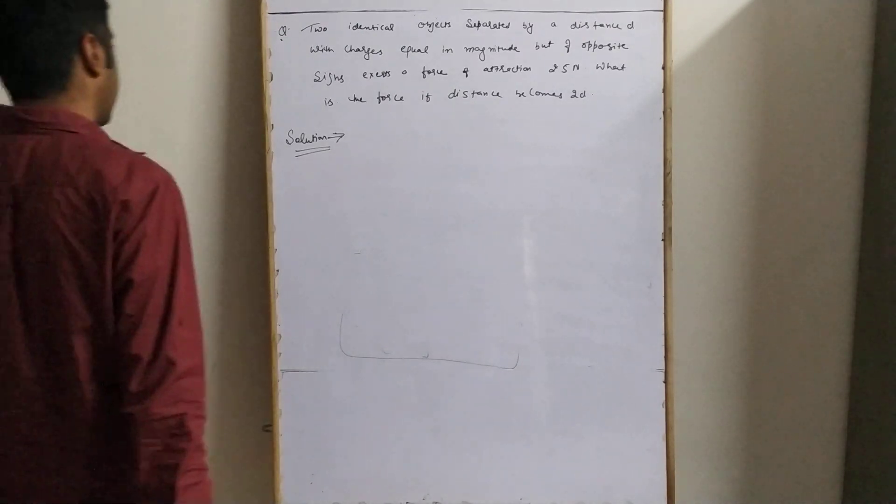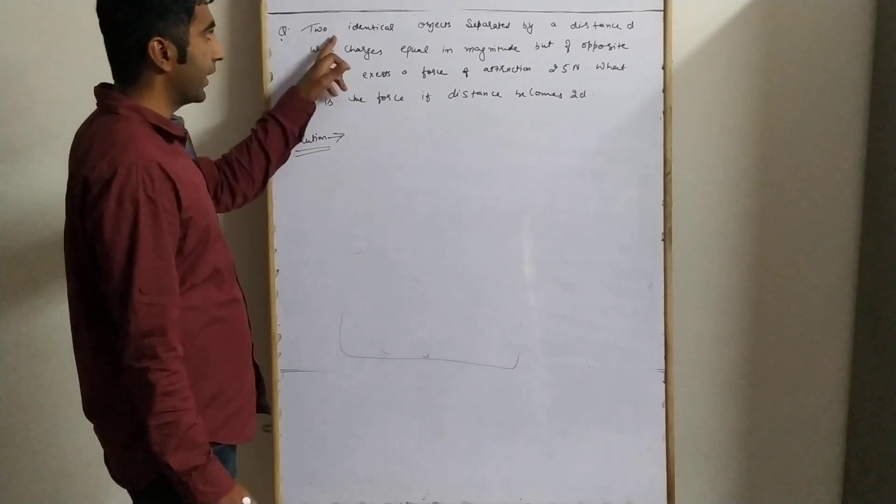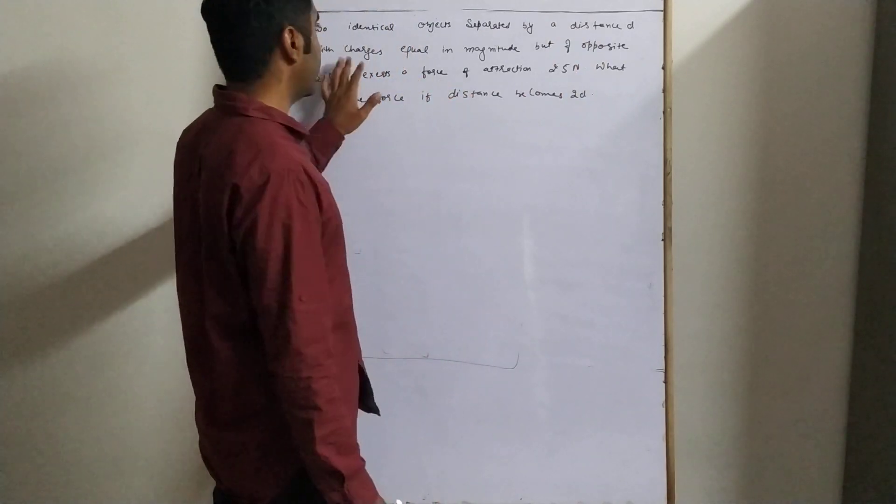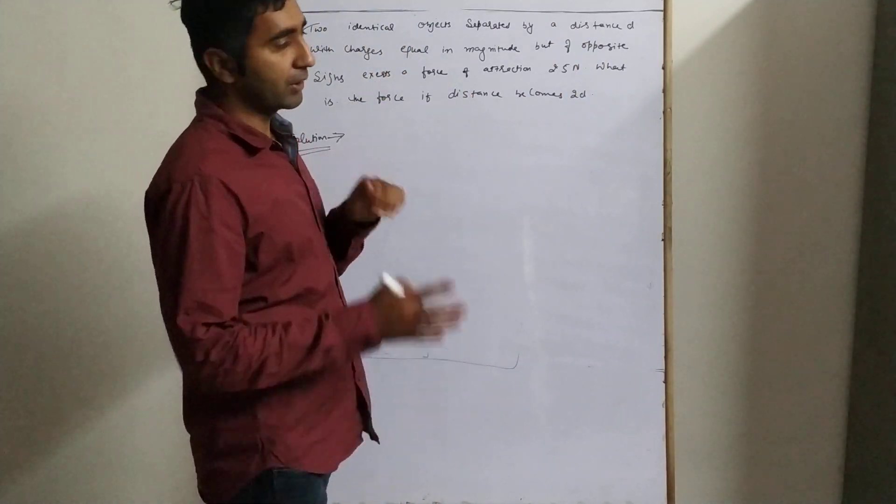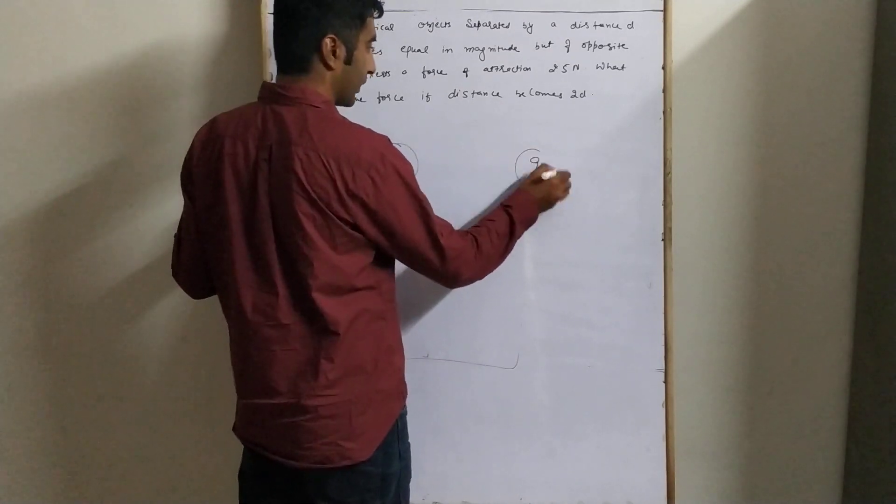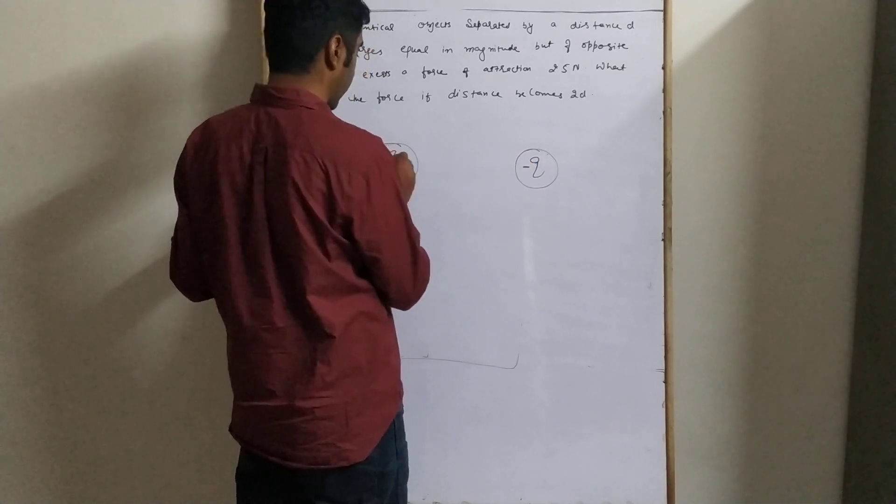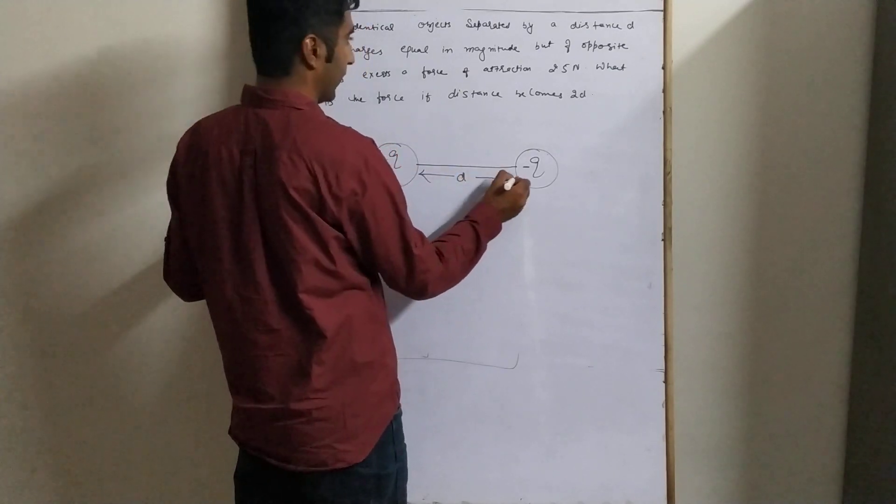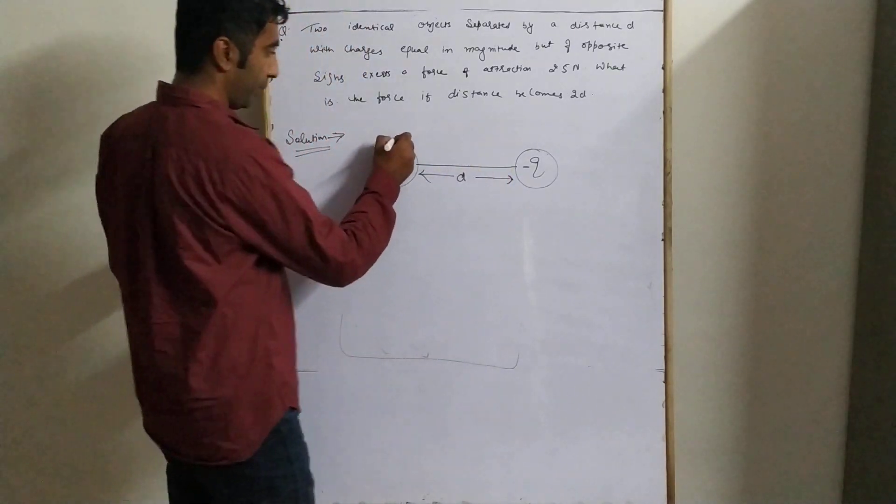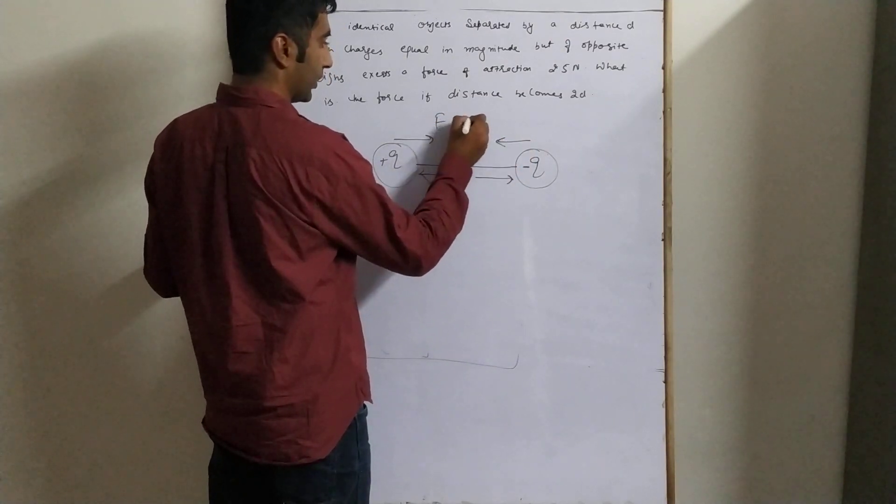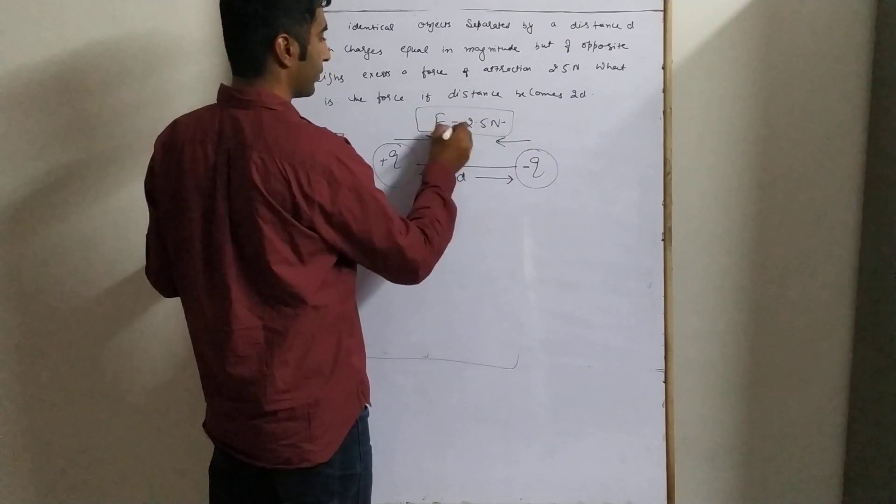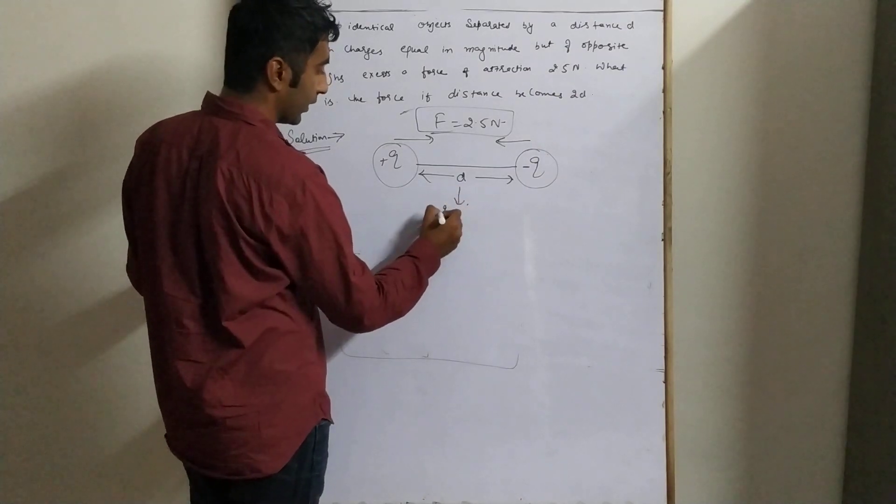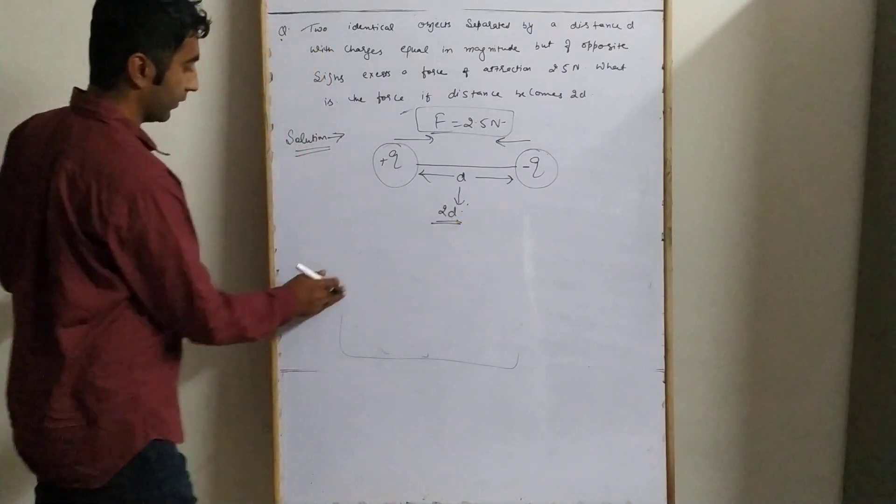Next numerical: Two identical objects separated by distance d with charges equal in magnitude but opposite signs—one positive, one negative. The force of attraction is 2.5 Newton. What is the value of force if this distance d is changed to 2d? Simple problem.